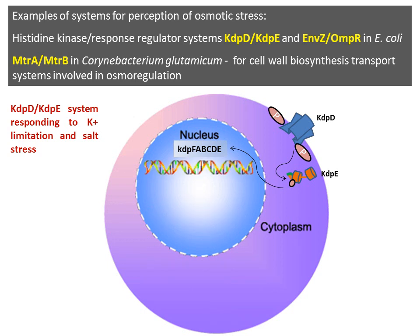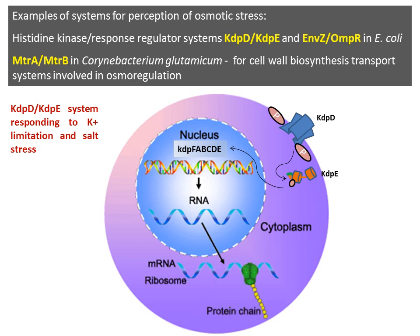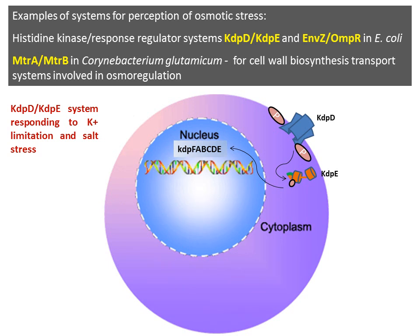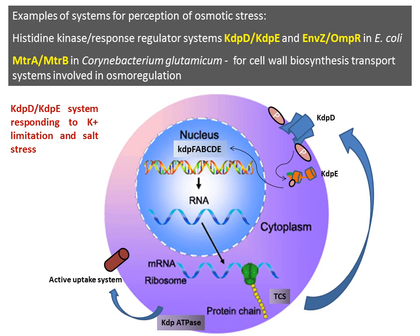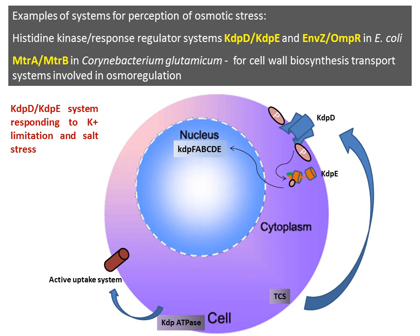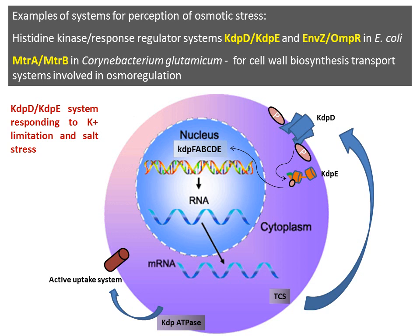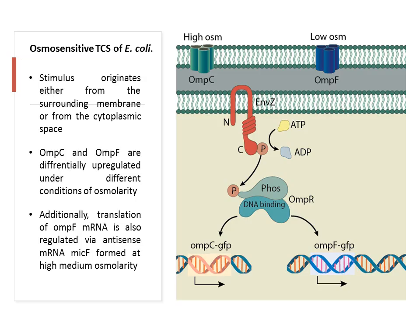When transcription from the kdpFABCDE operon changes, RNA content increases and proteins are formed. This operon is responsible for synthesis of several proteins — first, components of the two-component system itself, so that more KdpD and KdpE are formed to perceive more signal and upregulate gene regulation. Second, it also codes for a KdpATPase that responds to potassium ion limitation, forming an active uptake system to take more potassium ions inside the cell.